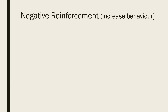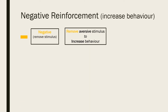Now let's look at negative reinforcement specifically. In negative reinforcement, the behaviour is being strengthened by the removal of an aversive stimulus. Remember that in learning, the word negative doesn't mean bad but it means subtraction — to take something away, just like in mathematics. Because we want the learner to repeat this behaviour and perform it more frequently, the stimulus being taken away is something unpleasant or aversive.